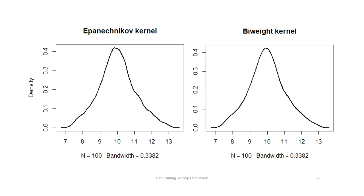We also consider the kernel estimate based on the Epanechnikov kernel and the biweight kernel. The estimates of the probability density function are quite smooth. Comparing the two, the estimator based on the biweight kernel is smoother, and is definitely closer to the parent normal distribution with mean 10 and variance 1.